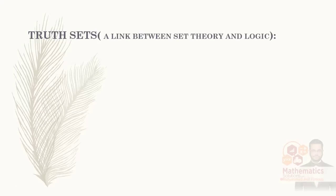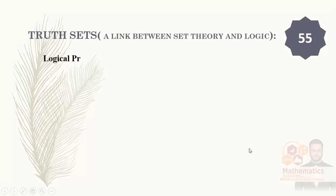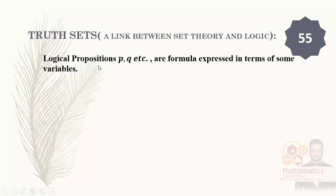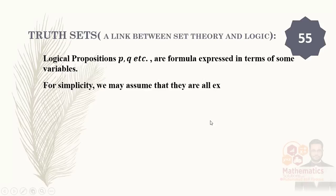Here we will talk about two sets and the link between set theory and logic. We have two sets. This information will be found on page 55 of the book. Logical propositions P, Q, R etc. are formulas expressed in terms of some variable. These propositions — P, Q, R etc. — can also be represented using some variable. For simplicity, we assume this representation.